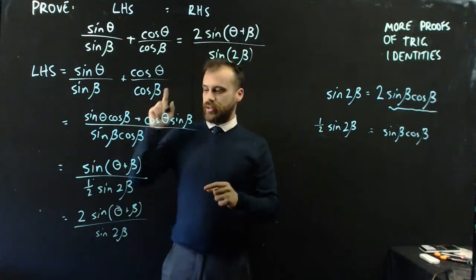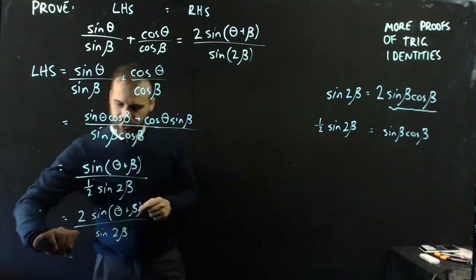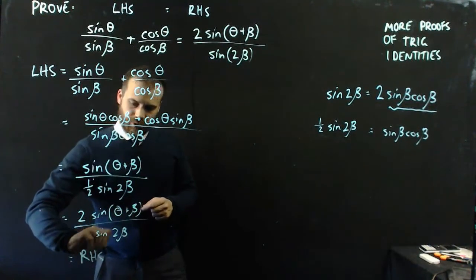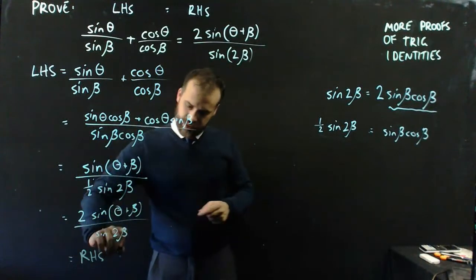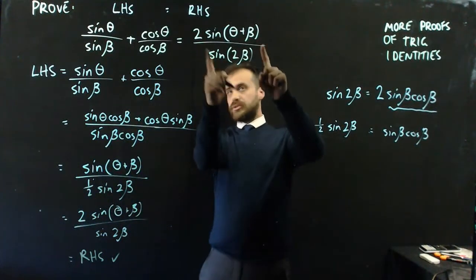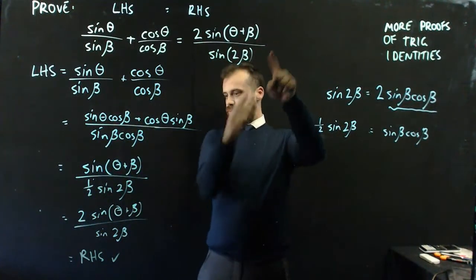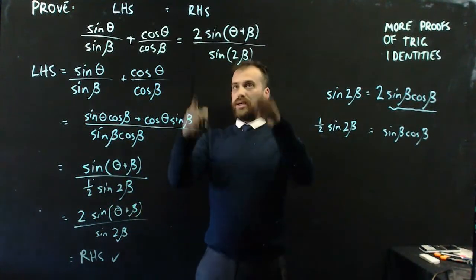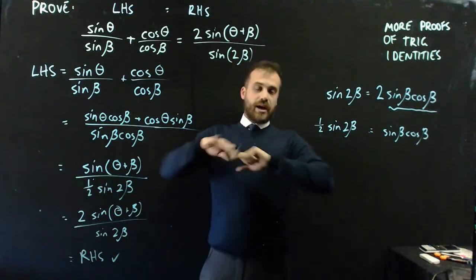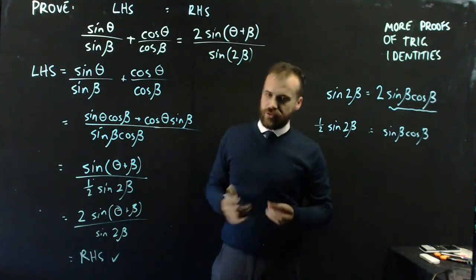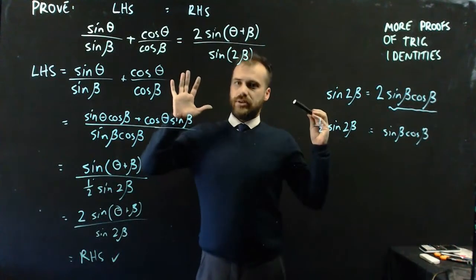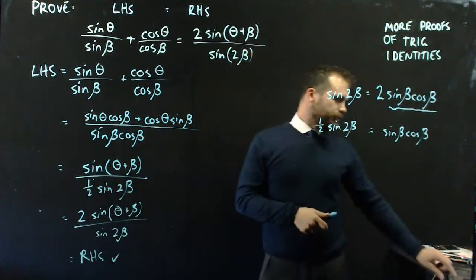That means the left-hand side equals the right-hand side — tick. 2 sine of theta plus beta equals 2 sine of theta plus beta, sine 2 beta equals sine 2 beta. I haven't broken any rules. I've used maybe three trig identities and it is proven.